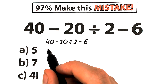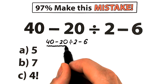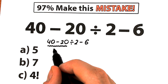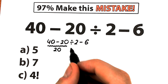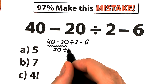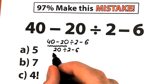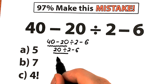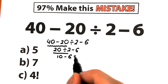One part of students solve this question by going from left to right. They take 40 minus 20 on the left-hand side, which equals 20, and then divide by 2, which gives 10, and then 10 minus 6 equals 4.